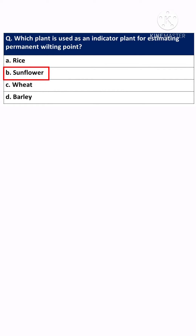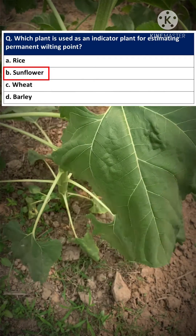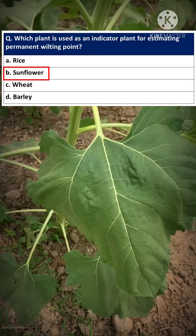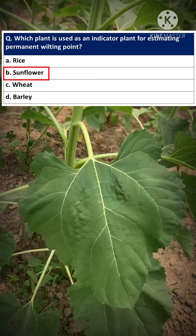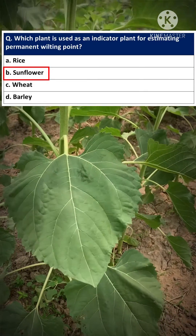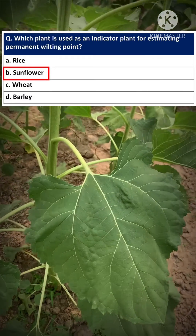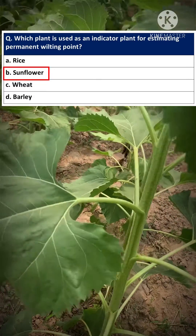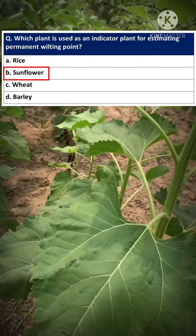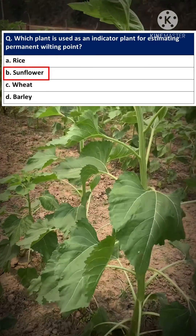The first question is: which plant is used as an indicator of permanent wilting point? Permanent wilting point is the lower limit of soil moisture availability — below this point, soil moisture is not available to the plant. The answer is sunflower. Sunflower is used as the indicator plant because it has bigger leaves and a denser root system, which allows it to easily exhaust soil water.